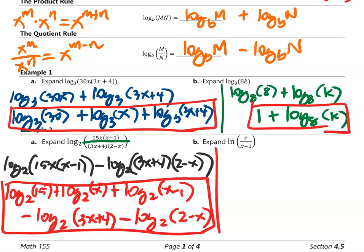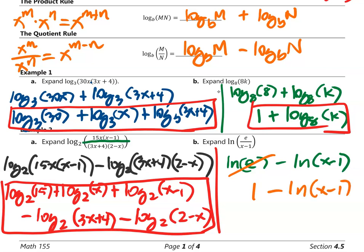Letter b: ln of e over (x − 1). Using the quotient rule: ln of e minus ln of (x − 1). Since ln of e equals 1, this simplifies to 1 minus ln of (x − 1). That is your answer.